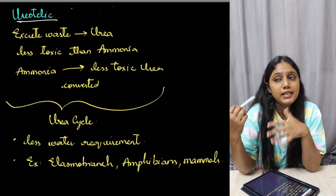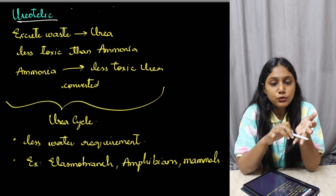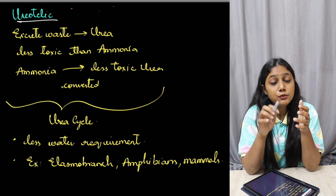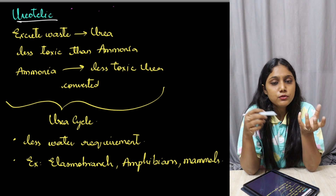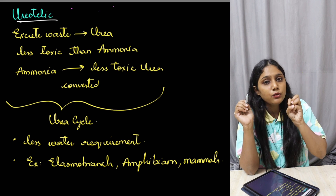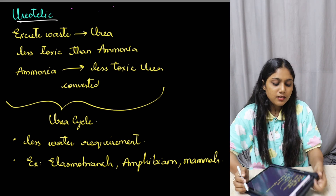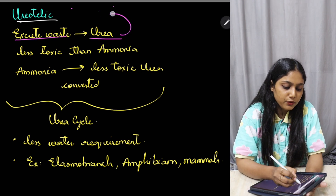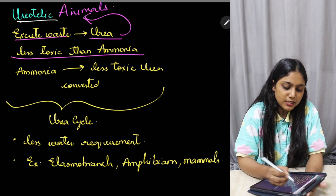In ureotelic organisms, ammonia produced in the body is converted into urea because ammonia cannot be eliminated directly. This conversion process is called the urea cycle, which takes place in the liver. The urea produced enters the blood, and when blood is filtered, urea is released and excreted out as waste.